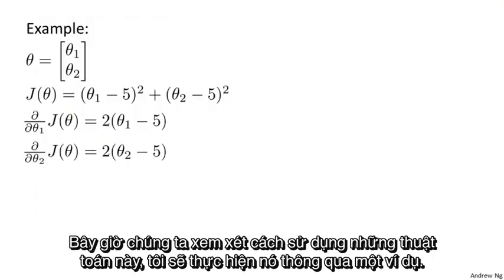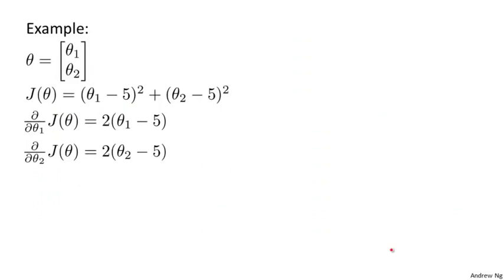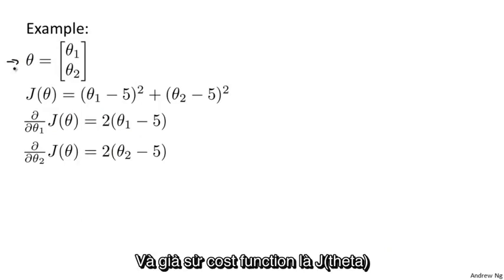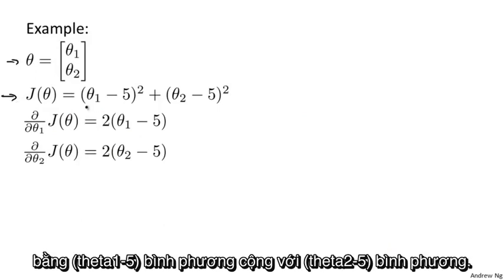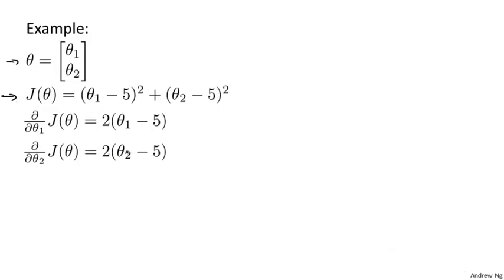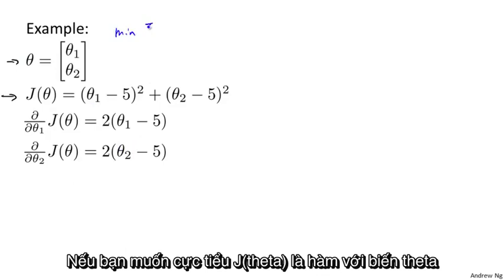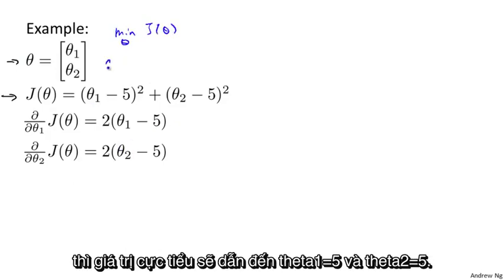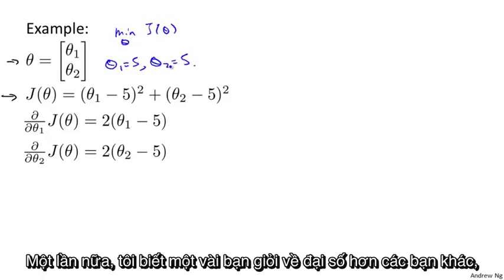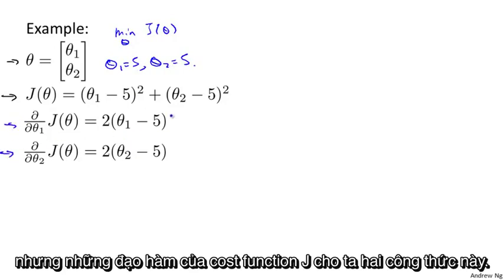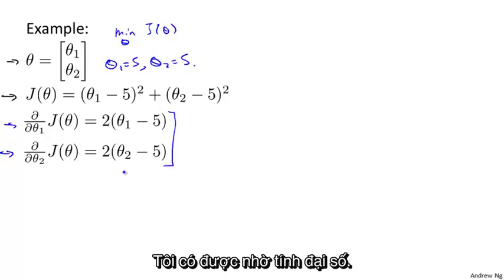Now let's explain how to use these algorithms with an example. Let's say that you have a problem with two parameters, where theta equals theta zero and theta one. And let's say your cost function is J of theta equals (theta one minus 5) squared plus (theta two minus 5) squared. With this cost function, the value that minimizes J of theta is going to be theta one equals five, theta two equals five. The derivatives of the cost function J turn out to be these two expressions — I've done the calculus.